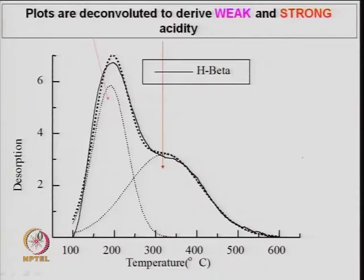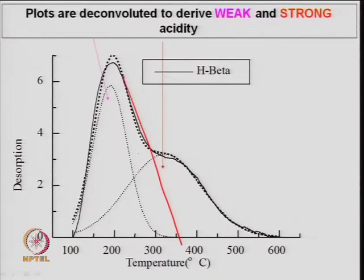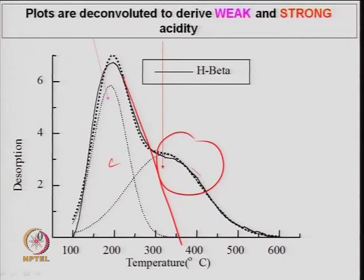You can deconvolute the peaks also — for hydrogen beta, one peak at lower temperature and another at higher temperature, and in between they are merged. One can deconvolute and find out the weak acid and strong acid. Different methods based on the same principle can also be used to find out heat of adsorption and heat of desorption — by measuring the slope at different heating rates, one can find out the rate of desorption of ammonia.